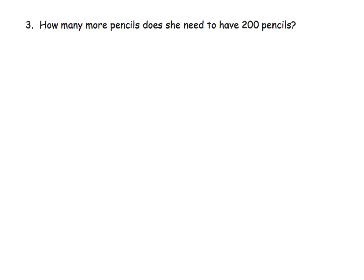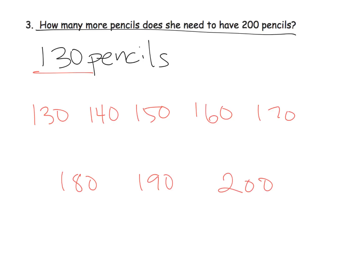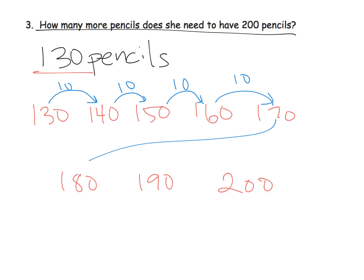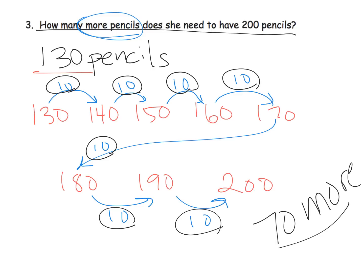The last question: how many more pencils does she need to have 200 pencils? She currently has 130 pencils because she bought 13 boxes. How many more does she need to get to 200? Counting up: 140, 150, 160, 170, 180, 190, 200 — that's another 10 each step — so she needs 10, 20, 30, 40, 50, 60, 70. She needs 70 more pencils.